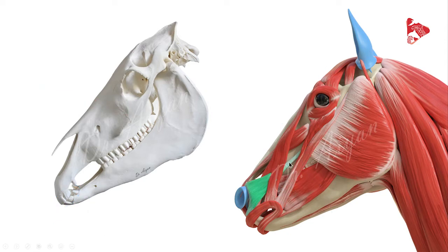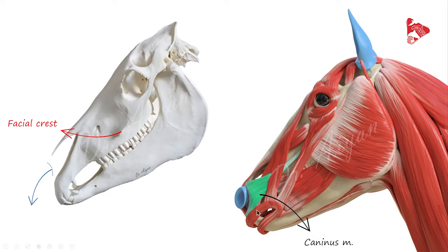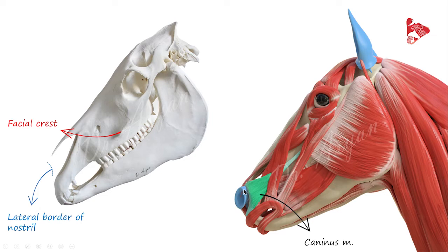The next muscle highlighted in green is the caninus muscle. The caninus muscle originates from the cranial part of the facial crest and inserts into two areas: the first is the lateral border of the nostril, and part of it inserts to the upper lip. The function of this muscle is to elevate the upper lip and widen the nostril opening.